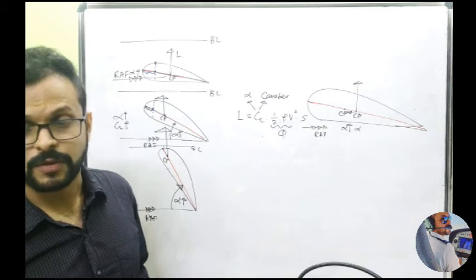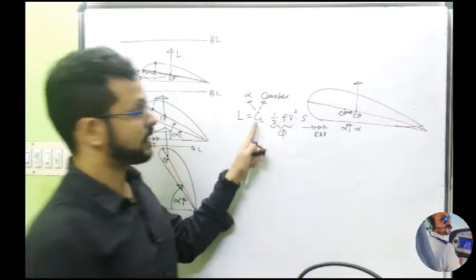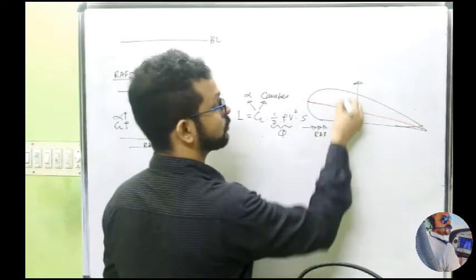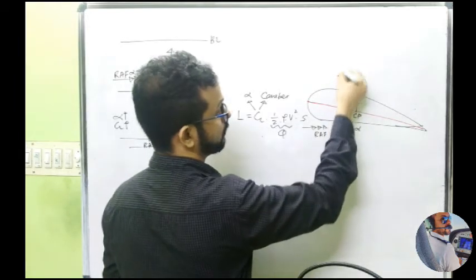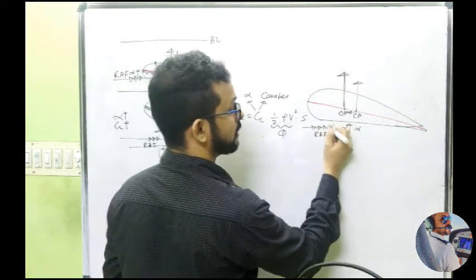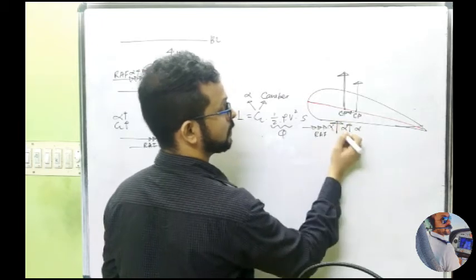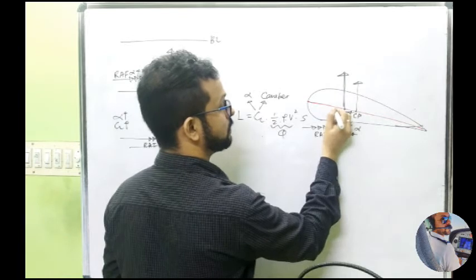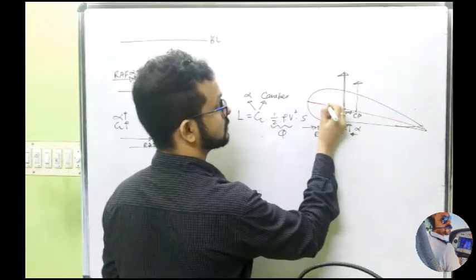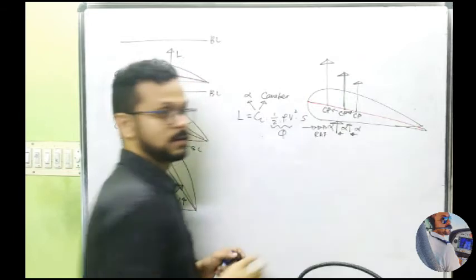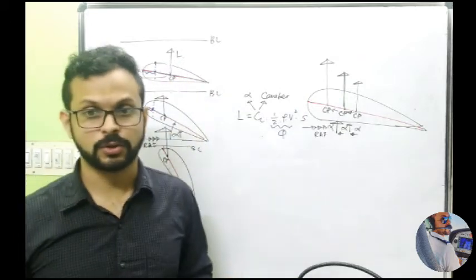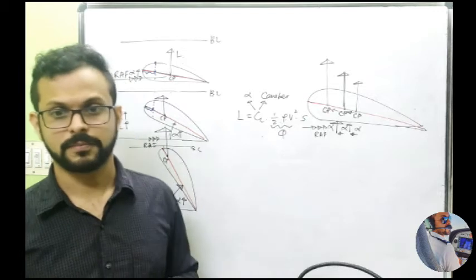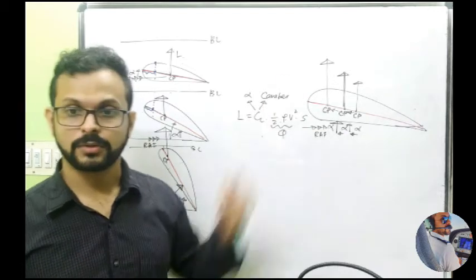When you increase the angle of attack, you increase the capacity of the wing, so it's going to produce more lift. Now what happens if I increase alpha further? CP moves further forward and lift increases. We know this is not going to continue indefinitely — once alpha hits the stall angle, everything is going to break down. So you can see how CP is actually moving forward.